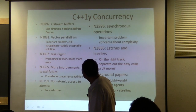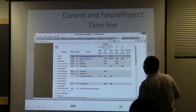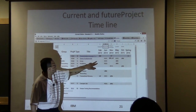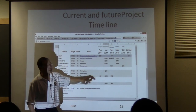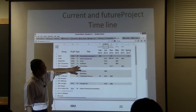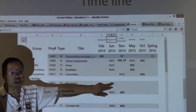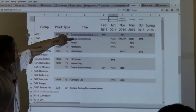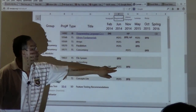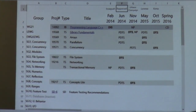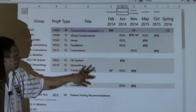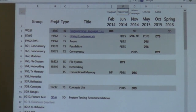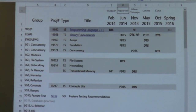Looking at the standards pipeline: C++14 is at the DIS stage. Going into the June meeting, Library, Array, and Parallelism TSs will be in the PDTS stage. Concurrency will also be in that stage. File System looks like it's going to reach DTS — the final stage before being voted out as an official TS — in the June meeting. Networking is mostly falling into Library Fundamentals. Concept Lite is going into PDTS. Some dates will slip by maybe one meeting, which is normal.